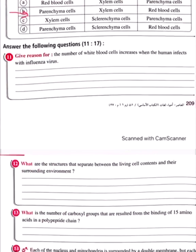Give a reason why the number of white blood cells increases when a human is infected with influenza virus. Answer: Because white blood cells contain digestive enzymes which help in attacking and destroying microbes.